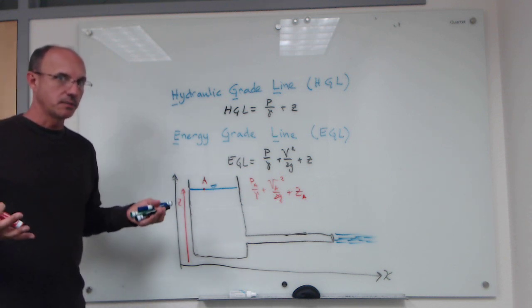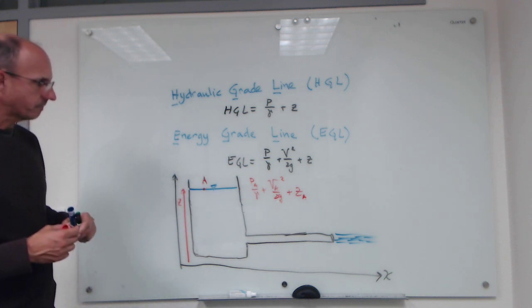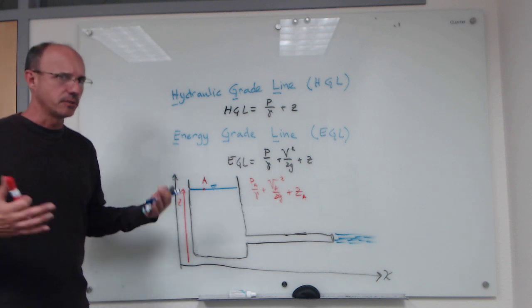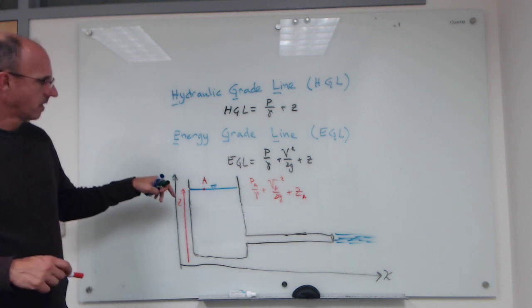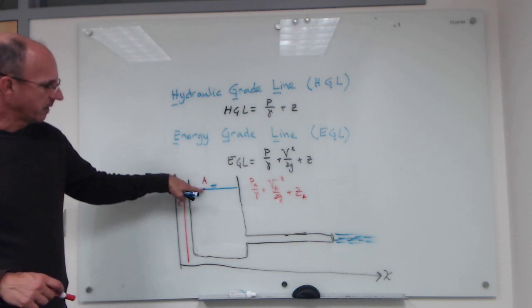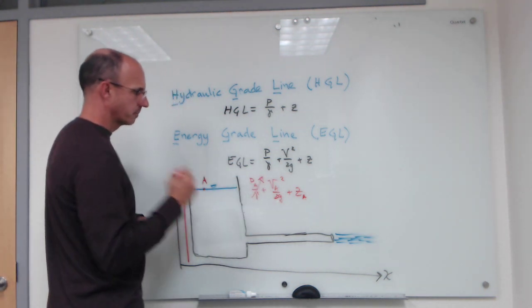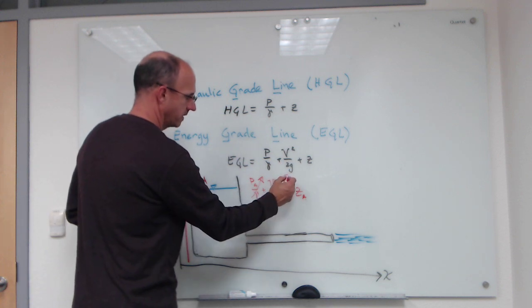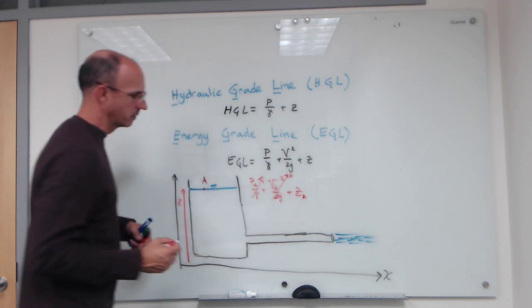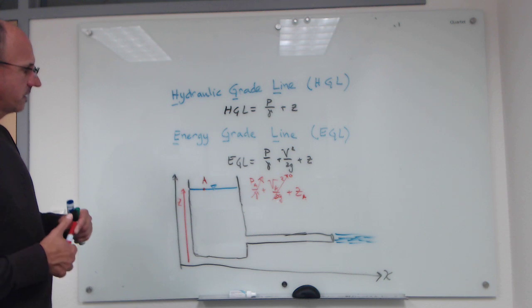If we work in some gauge pressures—and when we do hydraulic grade line analysis we typically work in gauge pressures—what we see is that at this point here the gauge pressure is zero, so that term is negligible, and also the velocity is zero, so that term goes away.